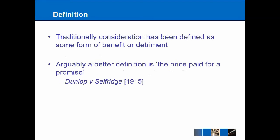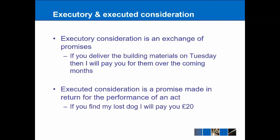Thinking about how we can define consideration — traditionally it is defined as some form of benefit or detriment. In an employment contract, the benefit is that you're getting paid and the detriment is that you're giving up your time to work. However, arguably a better definition is consideration being defined as the price paid for a promise, which comes from the 1915 case of Dunlop v Selfridge, where the judge relied heavily on the academic work of Pollock. That's a slightly better definition because we're talking about potentially a promise of something in the future, which leads us to executory and executed consideration — the two types to really think about.